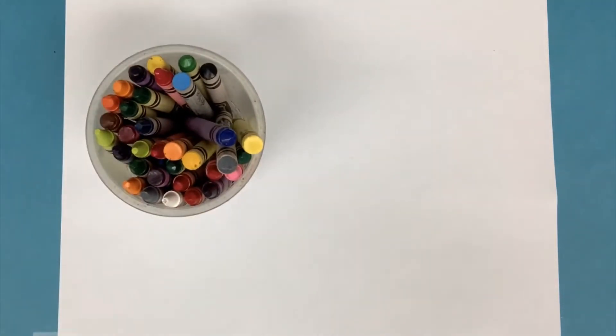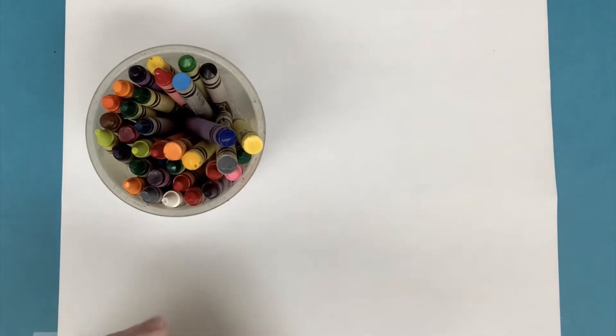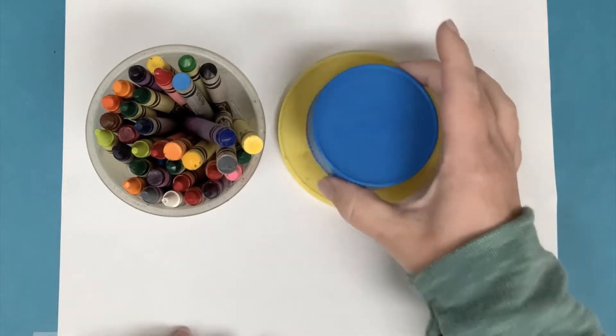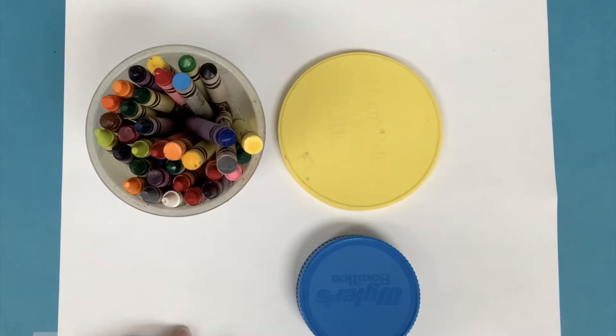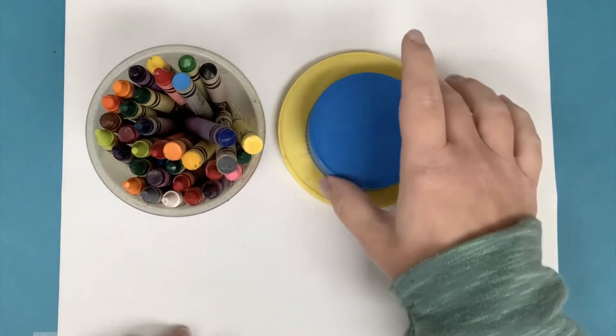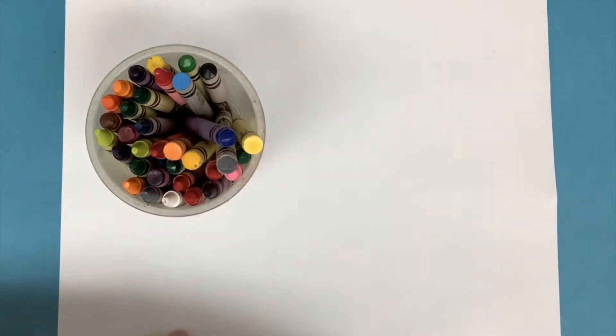For this activity, you are going to need a piece of paper, some crayons, and if you'd like to, you can find some lids that are different sizes to make the wheels. If you don't have lids, you can always just try your best at making circles on your own.